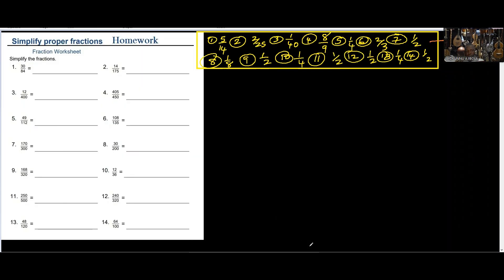Whenever we're given fractions to simplify, it simply means we want the fractions to appear in the simplest form possible. So all of these fractions given to us, we want them to appear in the simplest form possible. These are your answers that have been submitted, so let us see all together now how it goes.